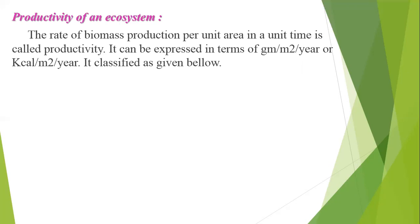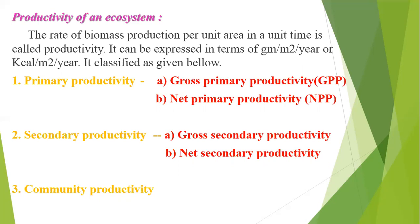Productivity is classified as follows: primary productivity, secondary productivity, and community productivity. Primary productivity is further classified into gross primary productivity (GPP) and net primary productivity (NPP). Secondary productivity is further classified into gross secondary productivity and net secondary productivity.